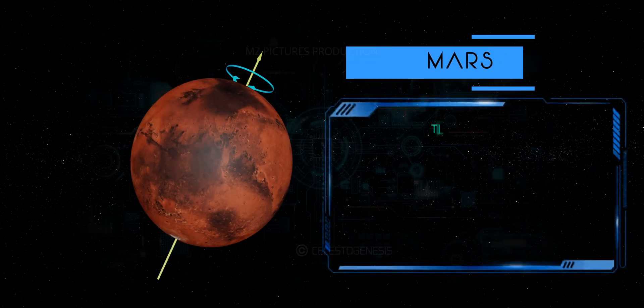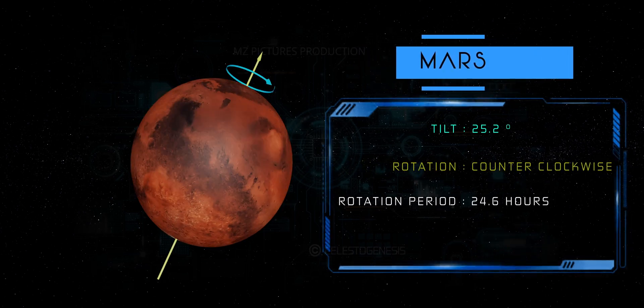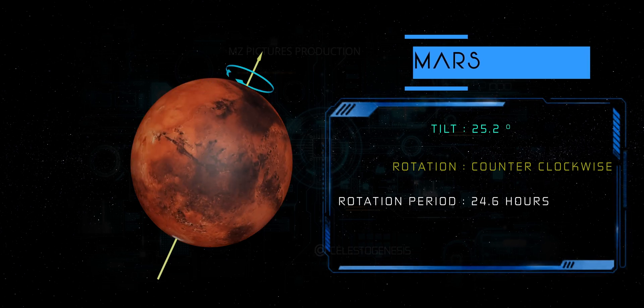Mars. Mars rotates prograde, similar to Earth, taking about 24.6 hours to complete one rotation. This gives Mars a day-length very similar to Earth's.